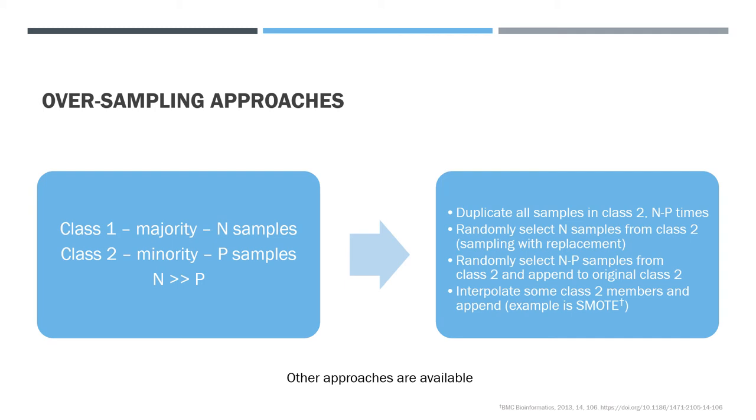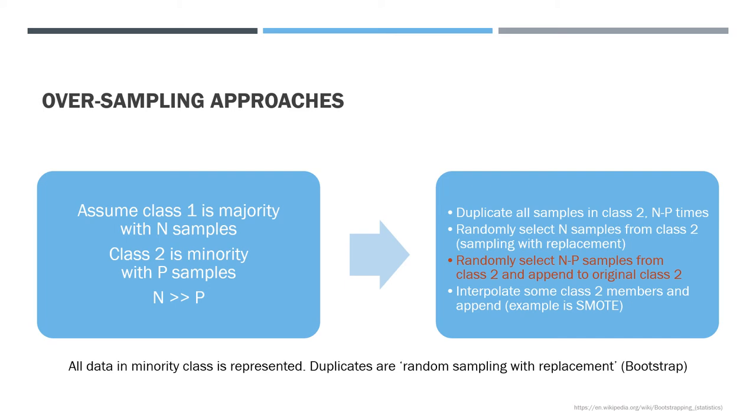One of these methods is called SMOTE and is discussed in a paper by Chawla and others. However, in this work, we decided to go with method three. This has the advantage of ensuring all the data required relating to the minority class are actually included in the training set and any duplication being handled by the well-respected bootstrap algorithm.